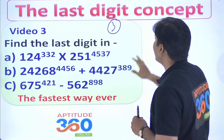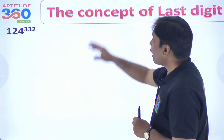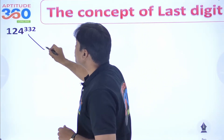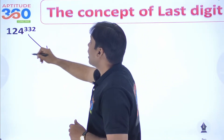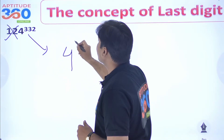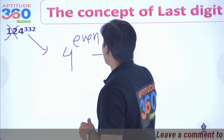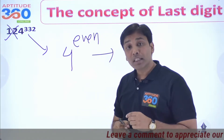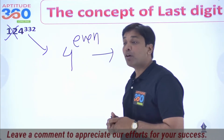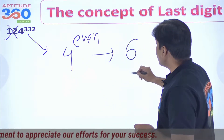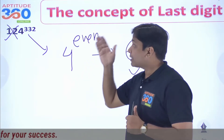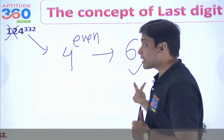Now I am going to find out how to find the last digit of these numbers. This is probably way too simple. You discard 12, and over here you have 4 to the power of an even number. In video number 1 we discussed that 4 to the power of any even number will give you 6 at the unit place. These are 10-second problems, not even 5-second problems.